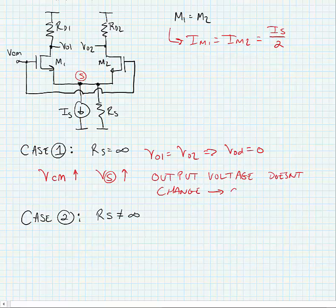In other words, we have a constant bias point for the transistors.